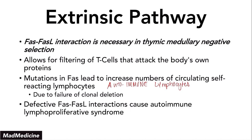To summarize, in the extrinsic pathway there are two sub-pathways. The first is the FAS-ligand and CD95 (aka FAS) binding pathway, where the ligand binds to FAS and induces cell death. The second is the CD8-positive cytotoxic T cell-mediated cell death, where the T cell releases perforin, which perforates the cell membrane, allowing granzyme B to enter the cell, activating caspases and causing cell death.